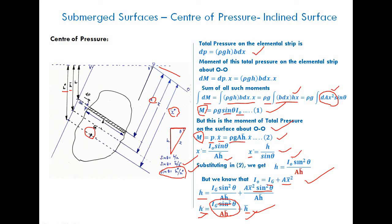To estimate the center of pressure for an inclined plate in contact with a liquid, you need: h-bar, the vertical distance of the center of gravity from the free surface; theta, the angle of inclination of the plane with the liquid surface; A, the area of the plate; and Ig, the moment of inertia of the plate about its axis through the center of gravity. For rectangular, circular, or triangular plates, Ig can be found easily from standard formulae.